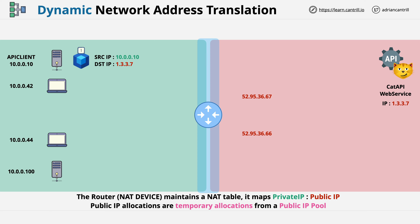So it sends this packet, and the router in the middle is the default gateway for anything which is not local. As the packet passes through the router or the NAT device, it checks if the private IP has a current allocation of public addressing from the pool.